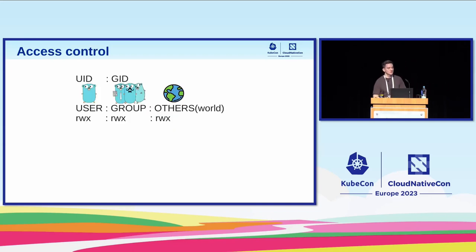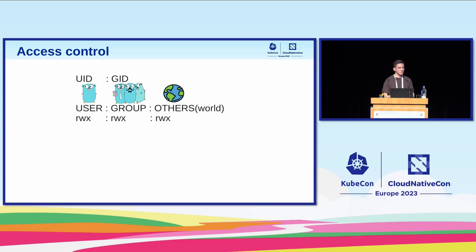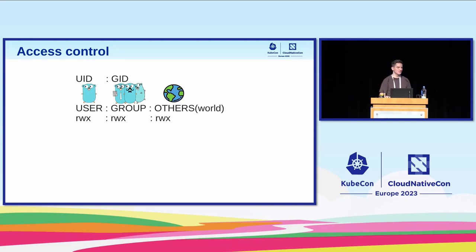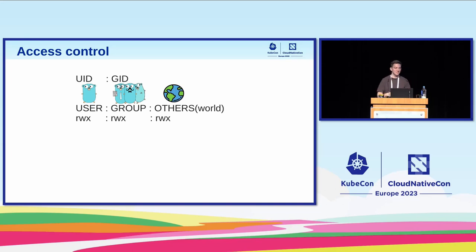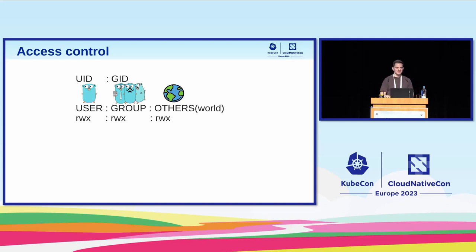Let me remind you how access control works in Linux. Every file, directory, socket, and binary gets assigned a UID and GID — these are just numbers representing the user and the group. We can associate names for these numbers, similarly to how DNS works for IPs. For these categories, we assign permission bits: the most critical ones are read, write, and execute. The kernel then checks if a process has access to a file, binary, or socket.